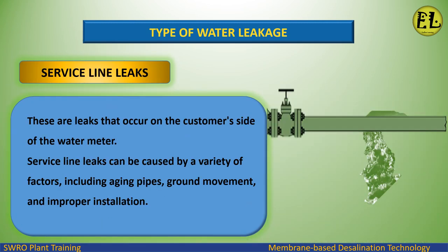Service Line Leaks. These are leaks that occur on the customer's side of the water meter. Service line leaks can be caused by a variety of factors, including aging pipes, ground movement, and improper installation.